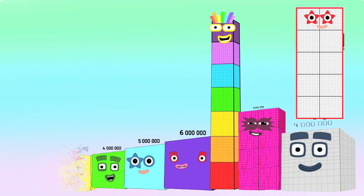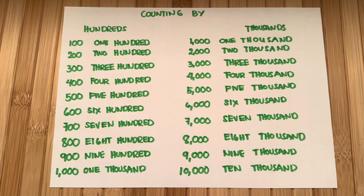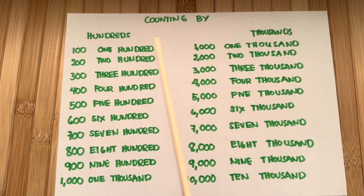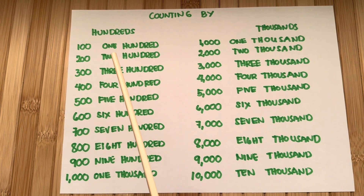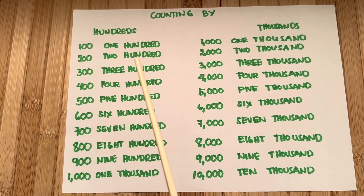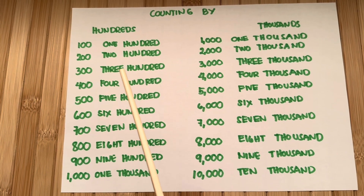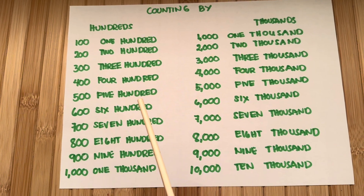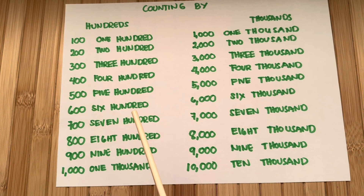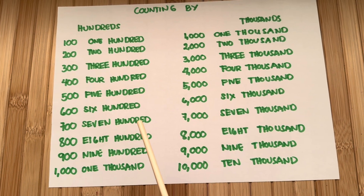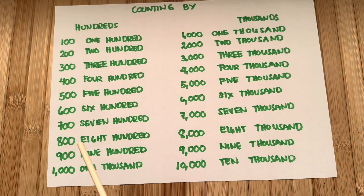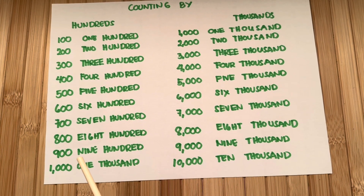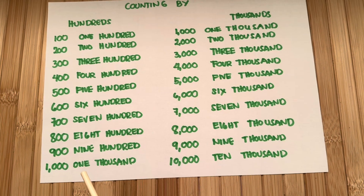And now let's do a recap. Let's learn to count by hundreds. One hundred, two hundred, three hundred, four hundred, five hundred, six hundred, seven hundred, eight hundred, nine hundred, one thousand.